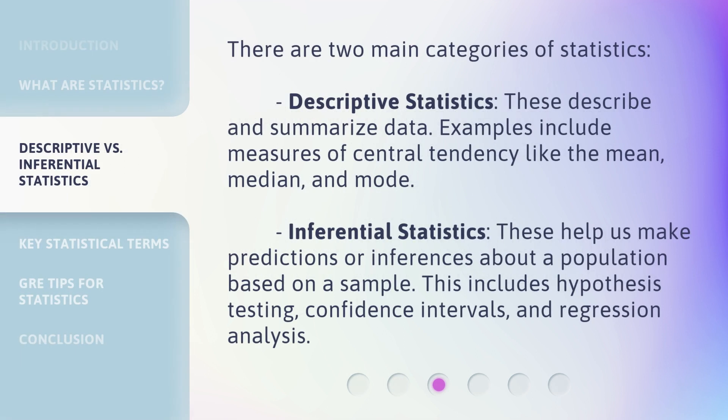There are two main categories of statistics. First, descriptive statistics — these describe and summarize data, with examples including measures of central tendency like the mean, median, and mode. Second, inferential statistics — these help us make predictions or inferences about a population based on a sample, and include hypothesis testing, confidence intervals, and regression analysis.